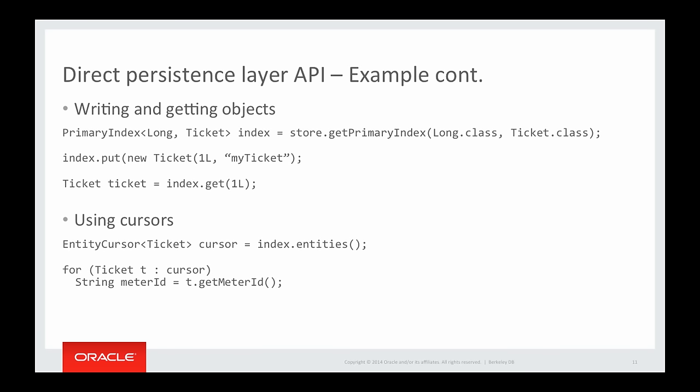With the DPL API, you access objects with a PrimaryIndex. You get a PrimaryIndex from the EntityStore and use put() or get() to save and retrieve objects from the database. Using cursors is also easier with the DPL API — you use entities() on the index to get a cursor object, and you can just iterate through the cursor with a for loop.